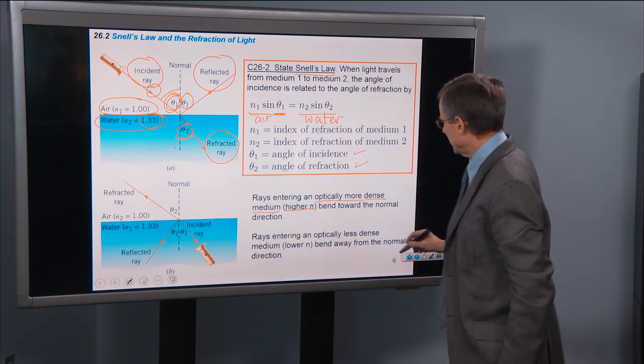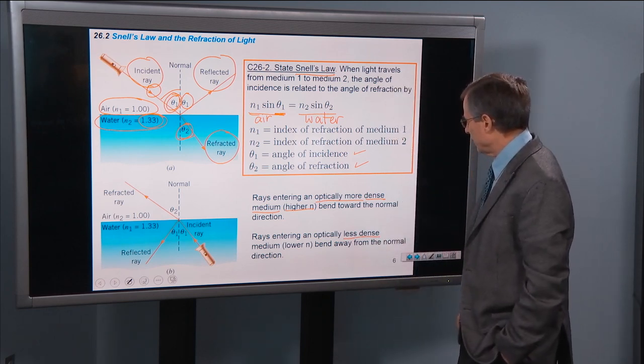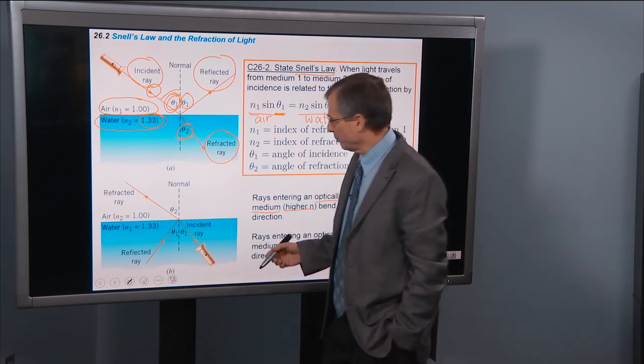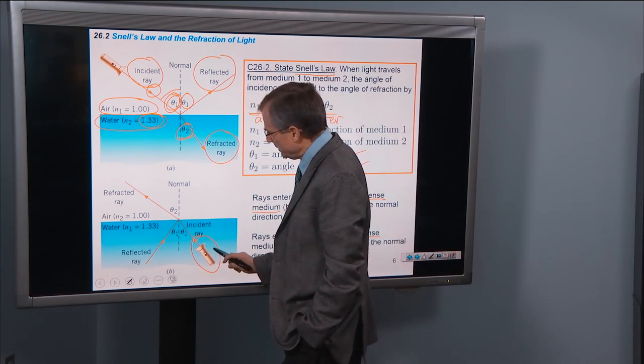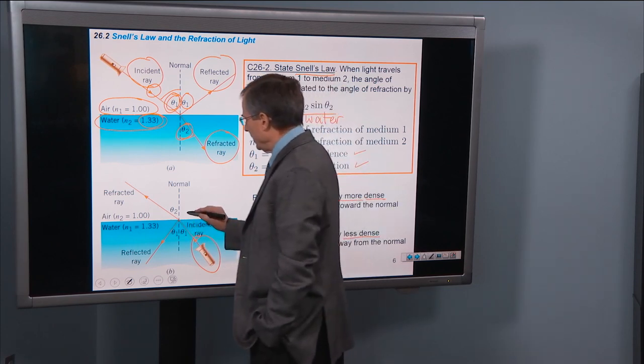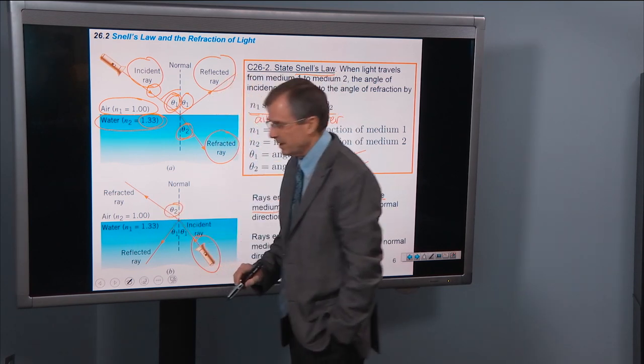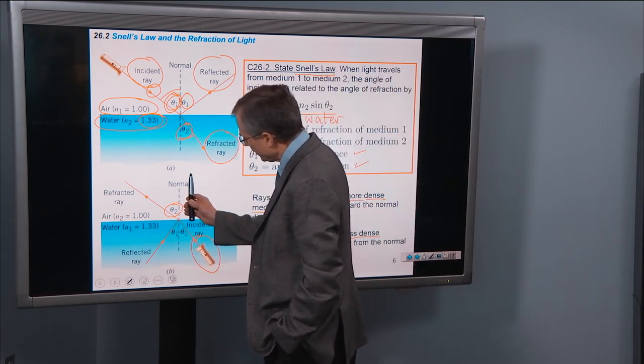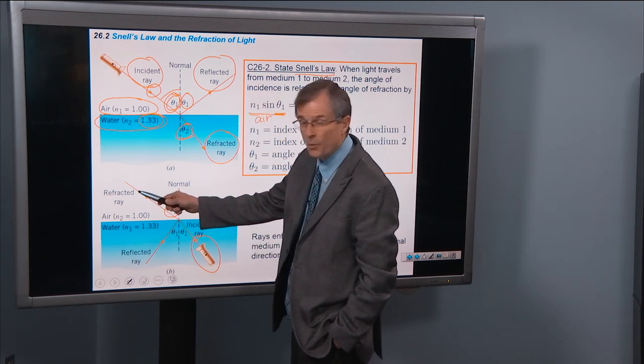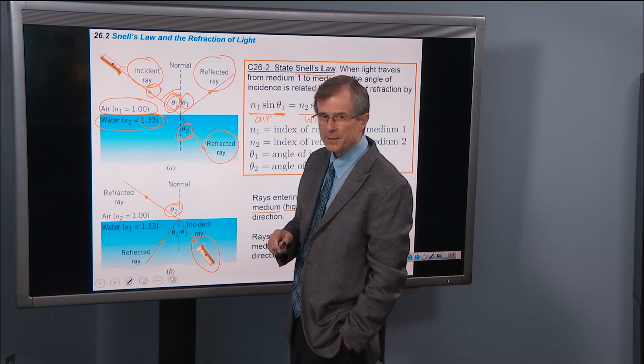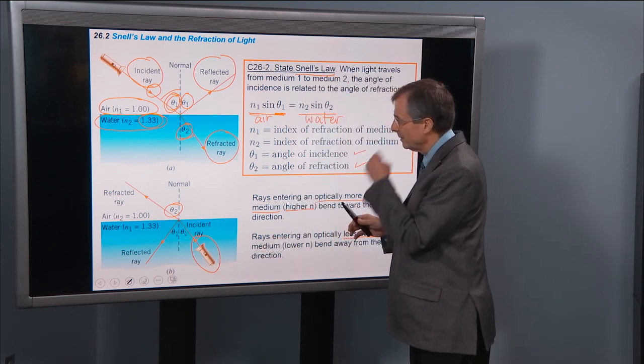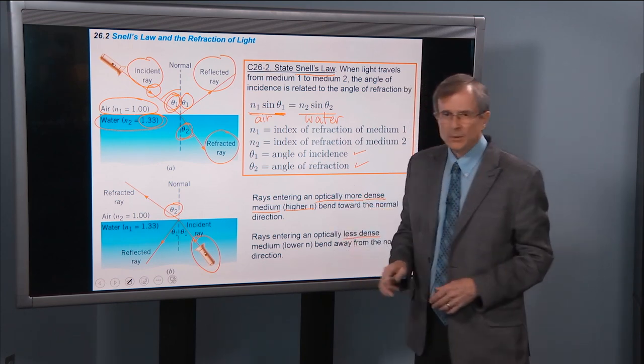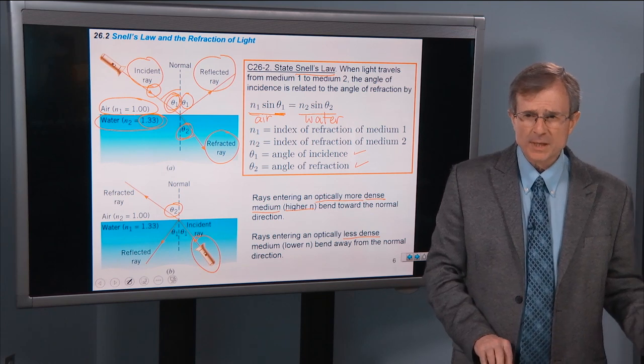And rays entering optically less dense medium, lower N, bend away from the normal. So if we put our flashlight or our laser pointer inside the water, then in this case the incident ray is in the water and the refracted ray is out here in air. And as you can see, this angle θ1 is smaller than θ2. The ray has bent away from the normal. And this kind of rule of thumb, it comes from math and you can do the math and plug in the numbers, but having this rule of thumb will help you through many, many different kinds of problems.